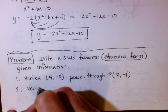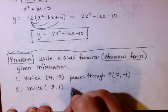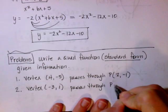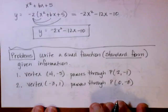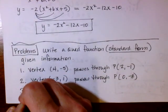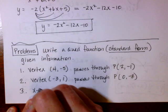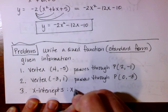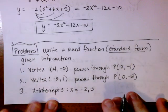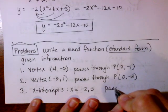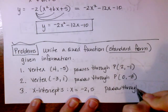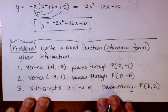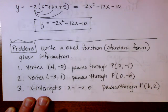Number two: the vertex is (−3, 1), passing through the point (0, −8). And the last problem: the x-intercepts are x equals −2 and 5, and it passes through the point (6, 2). Those are your three problems for the evening. I'm glad you had a short lecture, and I will see you tomorrow.